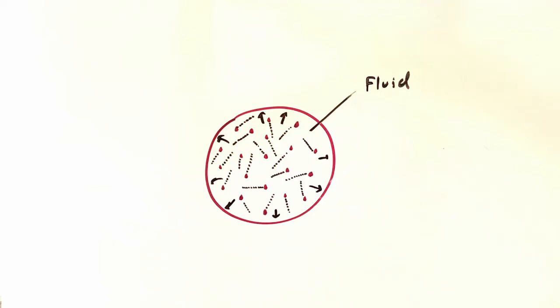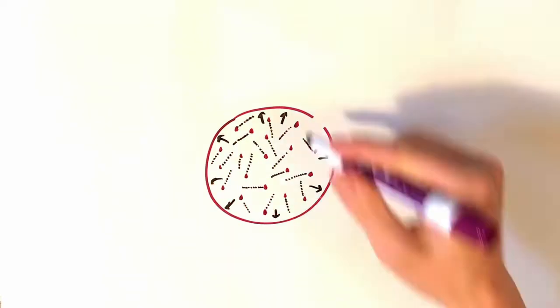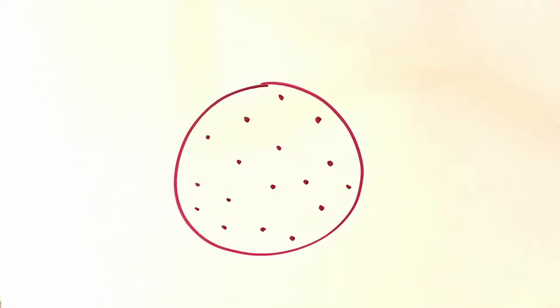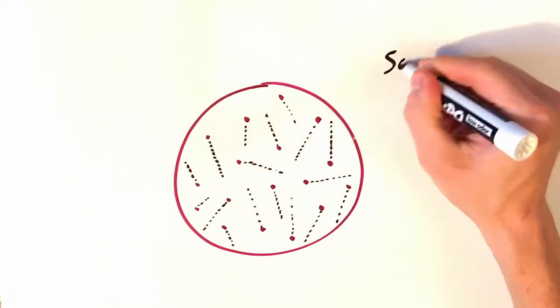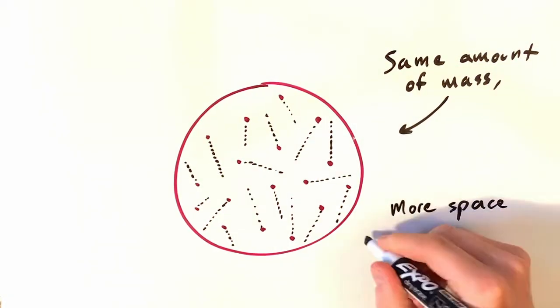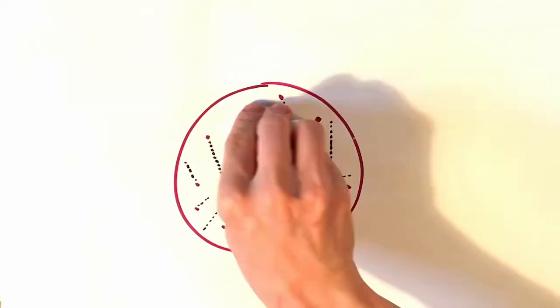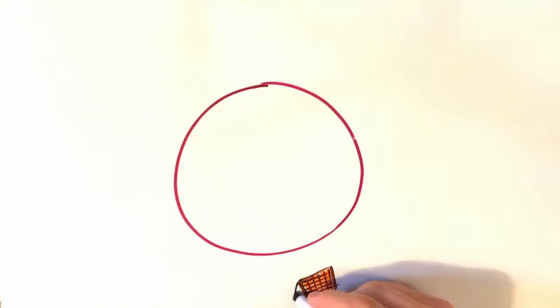Now suppose that we applied a little bit of heat to our fluid. This is going to make our fluid expand. And the reason for that is because our particles are zipping around faster, and so they impart a greater force, and they take up more space. So we have the same amount of mass, the number of particles hasn't changed, but it's spread out in more space. And this is actually why a hot air balloon floats.